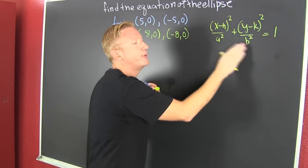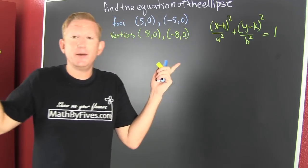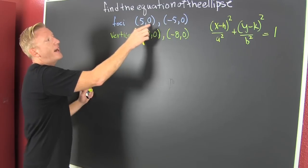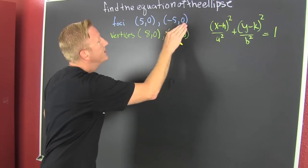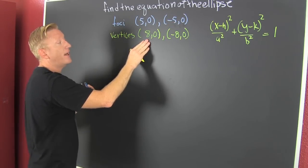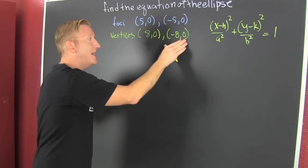Now, I don't care which one's a and which one's b. I'm just gonna let b be the big one. Anyways, they give us that our foci are (5,0) and (-5,0), and then our vertices is (8,0) and (-8,0).